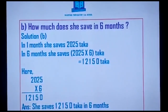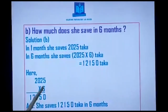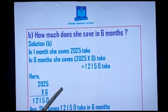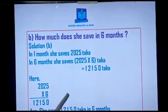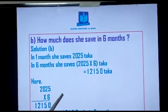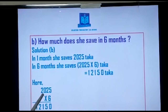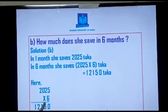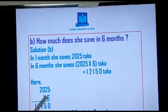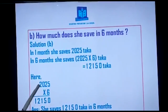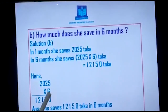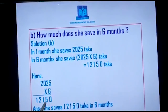Next: six twos are twelve, but I am carrying three, so twelve plus three is fifteen — I write five and carry one. Next: six zeros are zero, but I am carrying one, so I write one. Then six twos are twelve — I write the whole number twelve because there is no digit left. So I got the answer: twelve thousand, one hundred fifty Taka. I replace the answer — twelve thousand, one hundred fifty Taka.